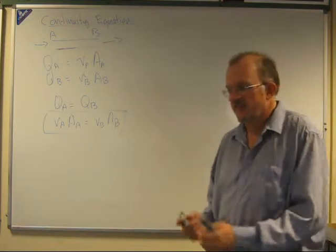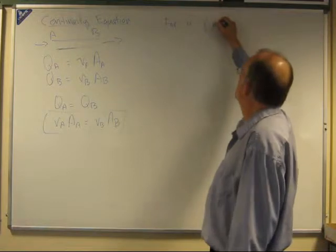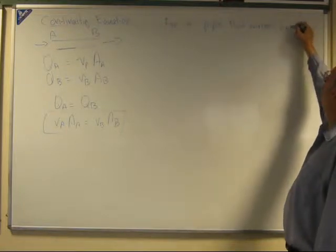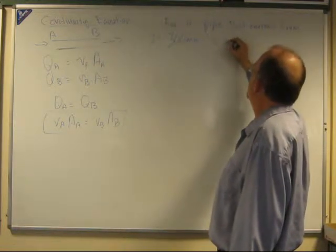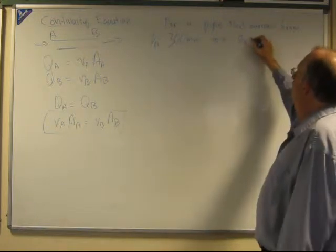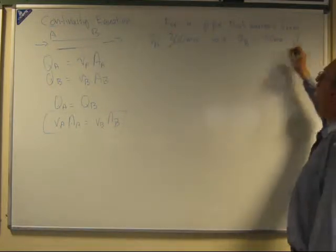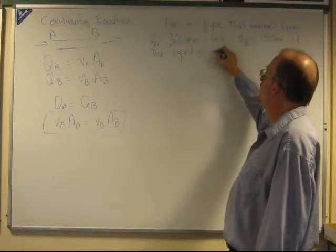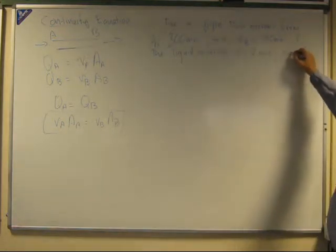So let's actually see how this actually works in practice. So for a pipe that narrows from 300 millimeter diameter to 150 millimeters. If the liquid entering at point A is traveling at 2 meters per second, what is the exit velocity?